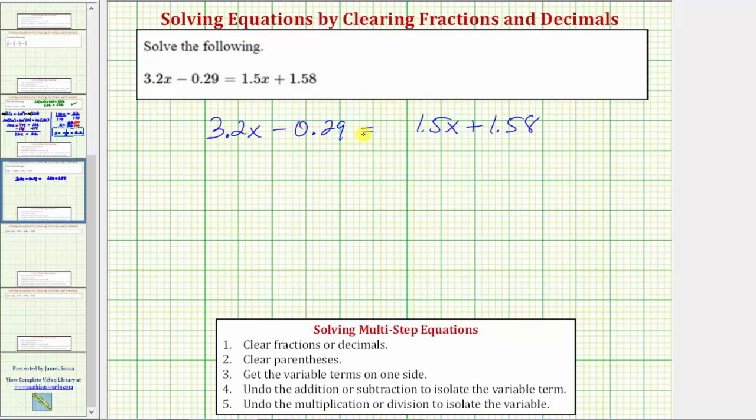To do this, we need to look at all the decimals and determine the most number of decimal places any of the decimals have. Notice how we have at most two decimal places, and therefore, to clear the fractions, we'll have to multiply both sides of the equation by 100. Multiplying by 100 is equivalent to moving the decimal point to the right two places, which will eliminate all the decimals from the equation.